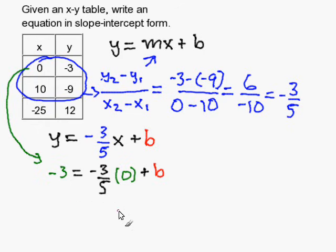Now I simplify my equation further. And 0 times negative 3 over 5 will get you 0, which leaves b by itself. And therefore, b is equal to negative 3.